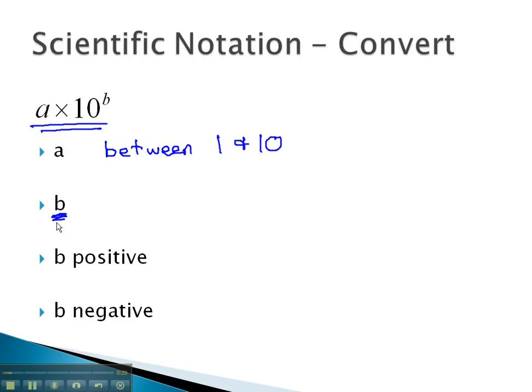The b, the exponent on 10, tells us the number of times the decimal has moved. To know which direction the decimal moves, we consider if b is positive or negative.